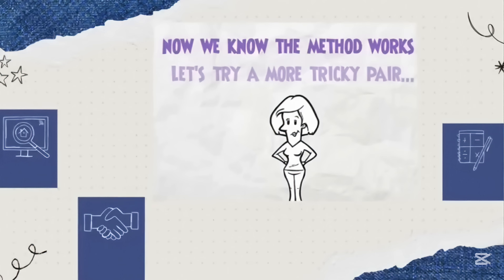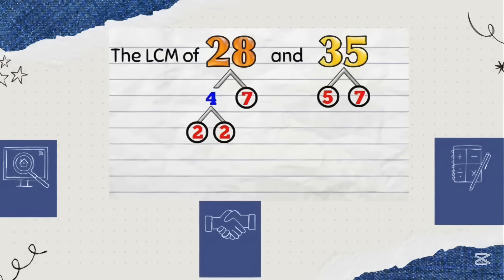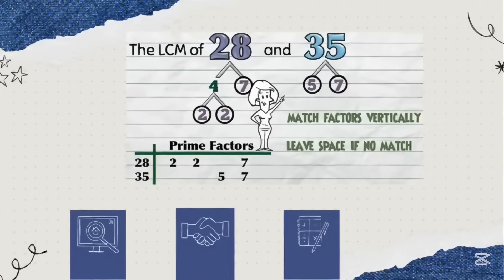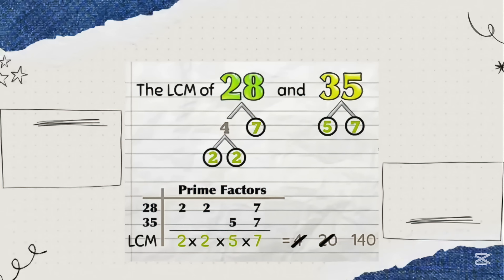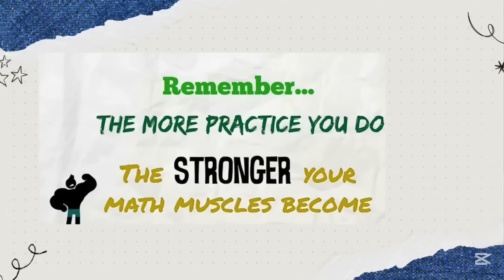Now we know the method is working, let's try a more tricky pair: 28 and 35. First find the prime factors of each number. 28 is from 4 times 7, and 4 is from 2 times 2 — circle the primes. 35 is from 5 times 7. Next we do the prime factors table — match factors vertically and leave a space if there is no match. 28 is 2 times 2 times 7, and 35 is 5 times 7. Now we have the prime factors of the LCM: 2 times 2 times 5 times 7. Finally work out the value: 2 times 2 is 4, times 5 is 20, times 7 is 140. You can see that even with bigger numbers, using prime factorization is going to be very helpful.